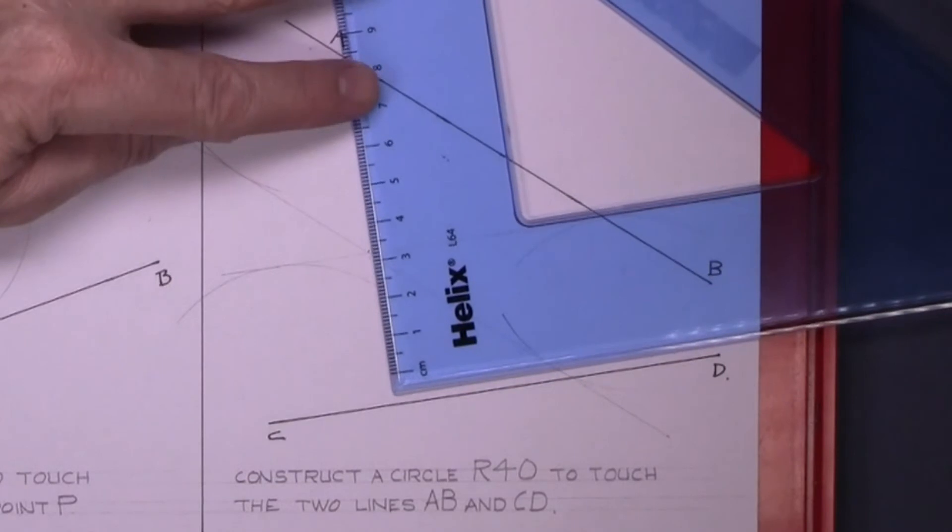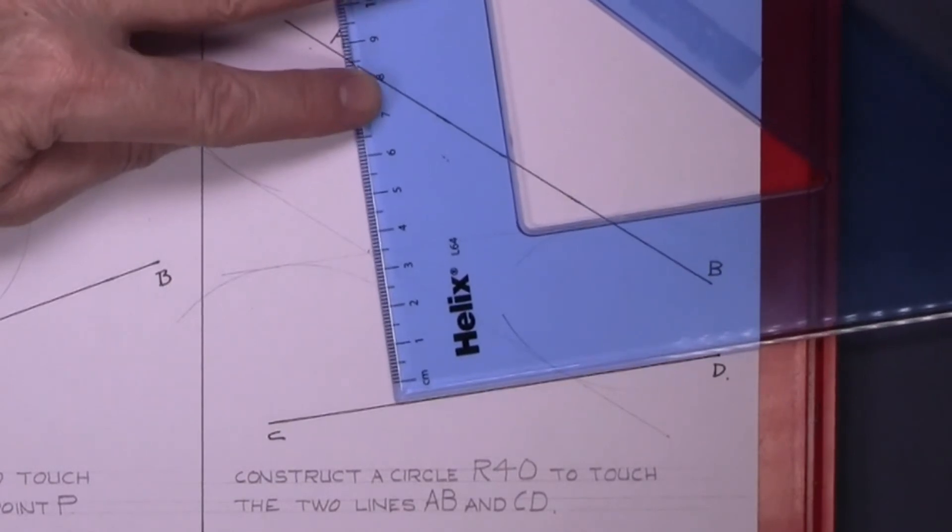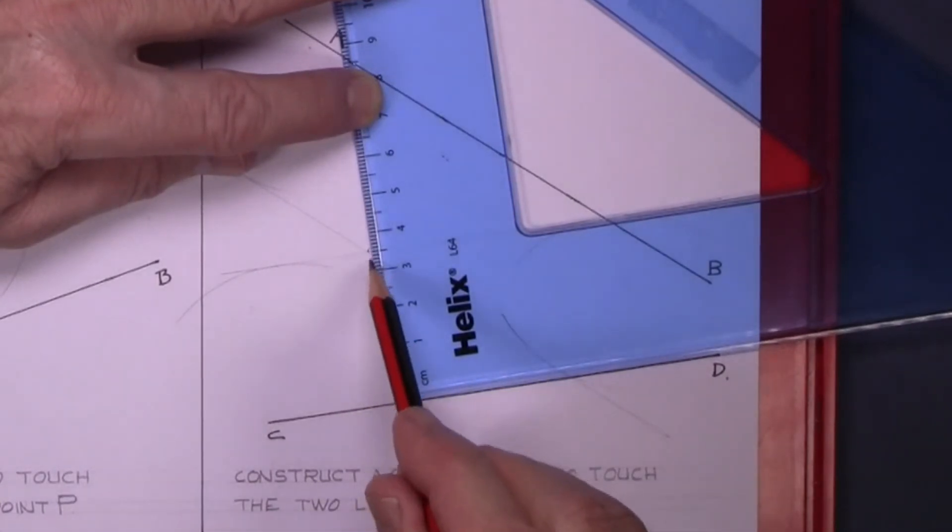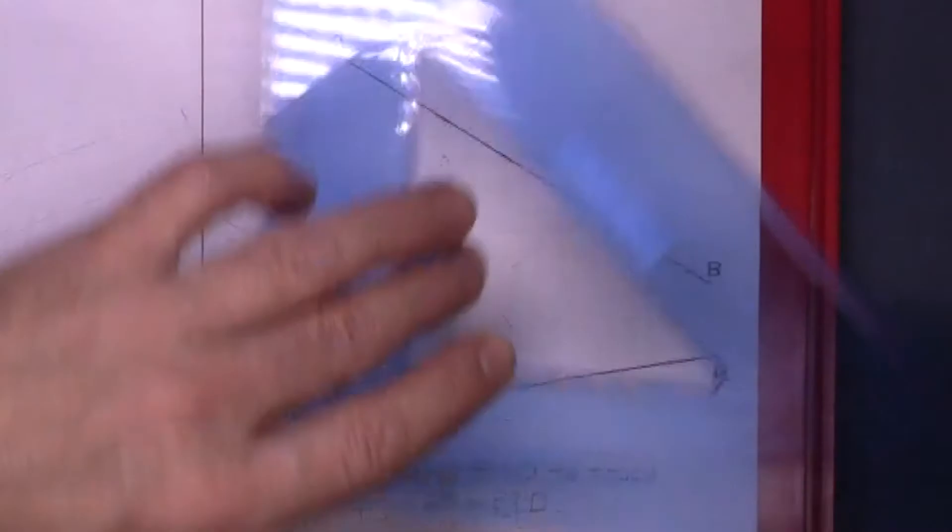Now get the points of contact as before. Create a 90 degree line to the line CD and that's your point of contact there.